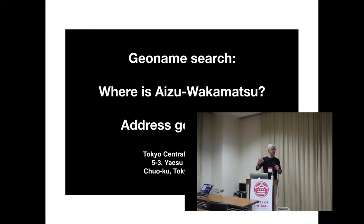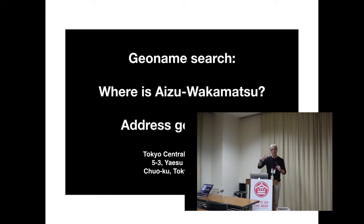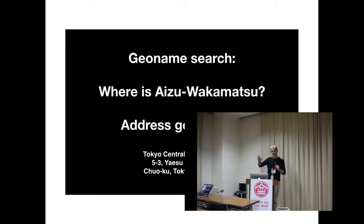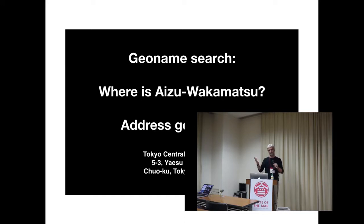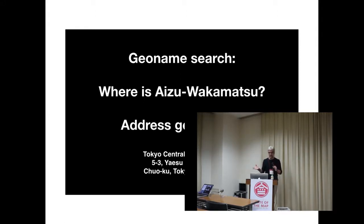In the geoname search case, you look for Aizu Wakamatsu and you expect a coordinate or a bounding box. So both are a kind of geocoding. My categorization is that geoname search is rough geocoding — given a geographical name, you want to find the spatial position — and address geocoding is fine-grained geocoding. Coarse-grained and fine-grained both share some attributes, properties, and issues.